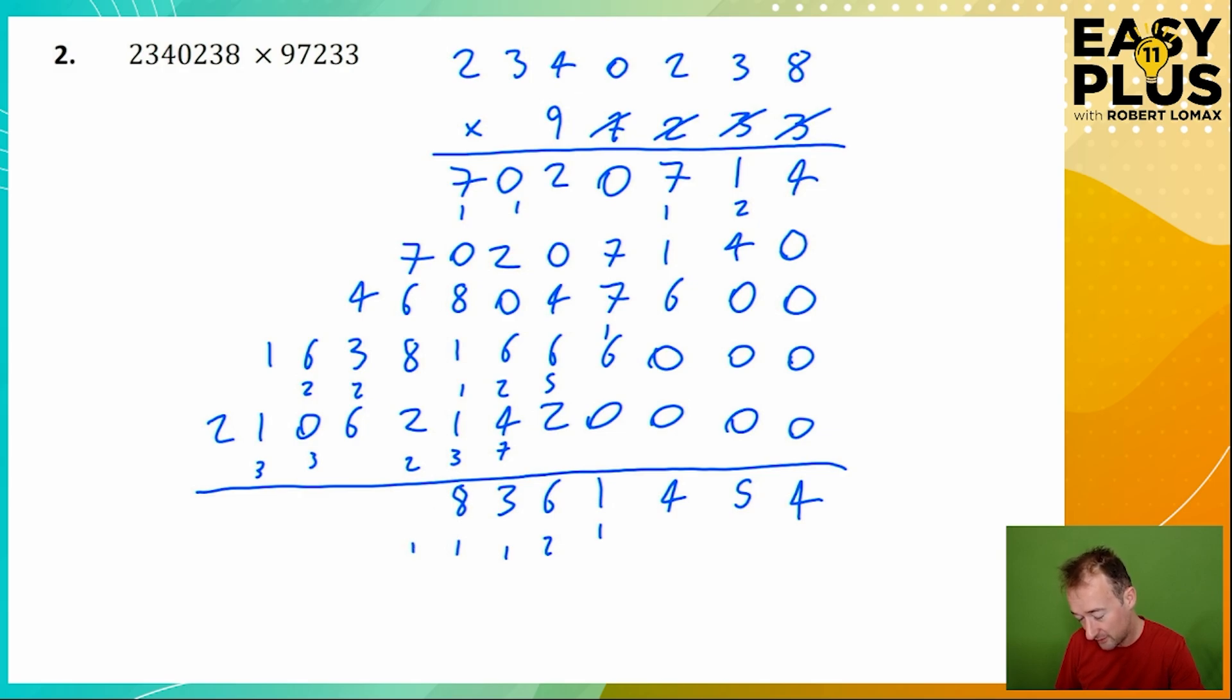7 plus 6 is 13, plus 8 is 21, plus 2 is 23, plus 1 is 24. 4 plus 3 is 7, plus 6 is 13, plus 2 is 15. Carry the 1. 6 and the carried 1, 7. 1 and 1 is 2, and we've got 2.